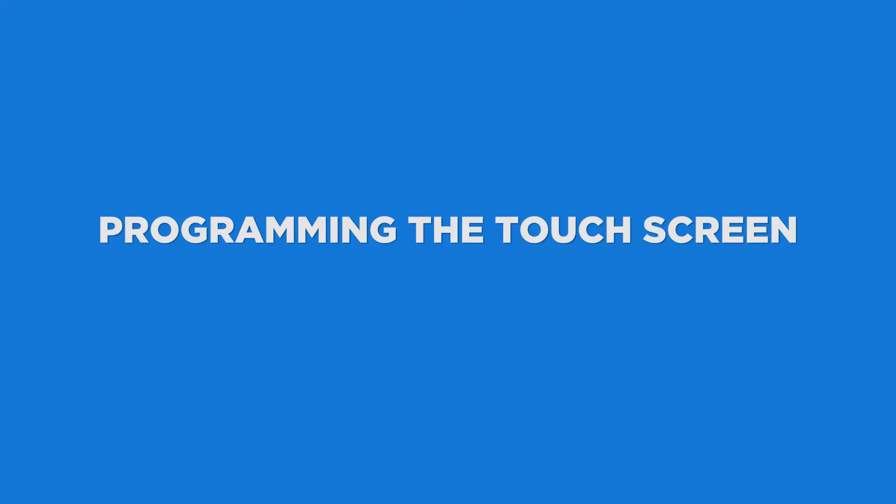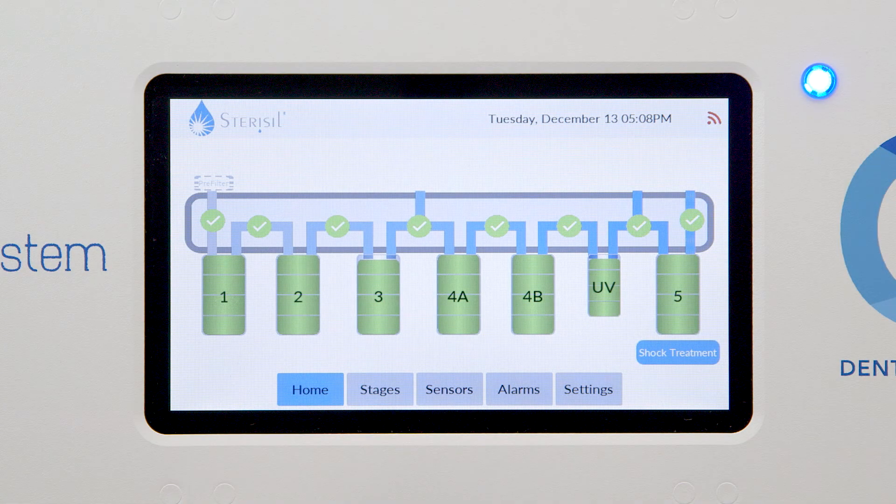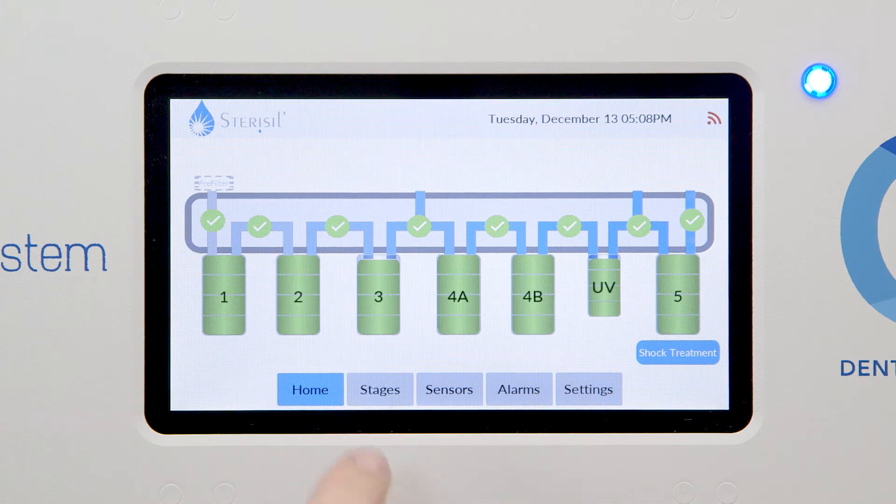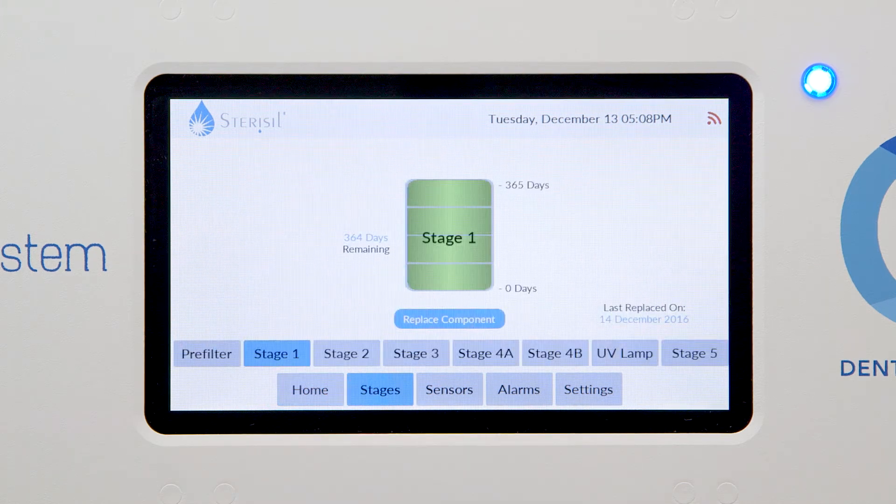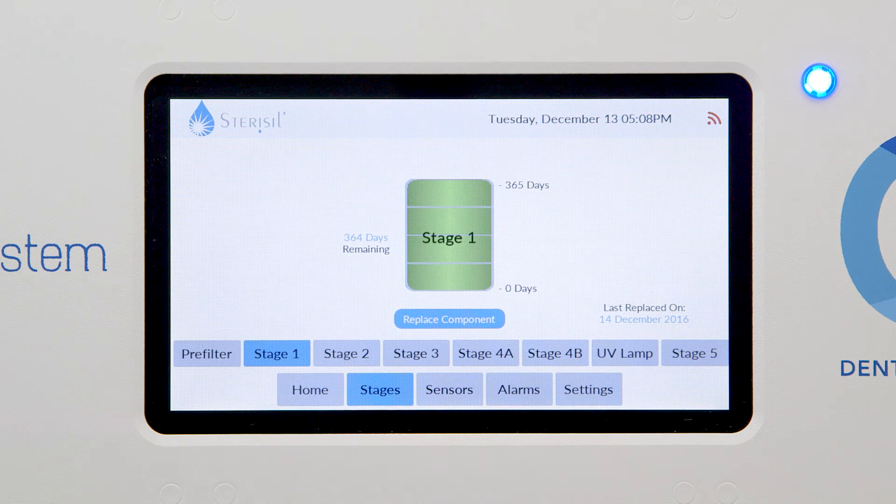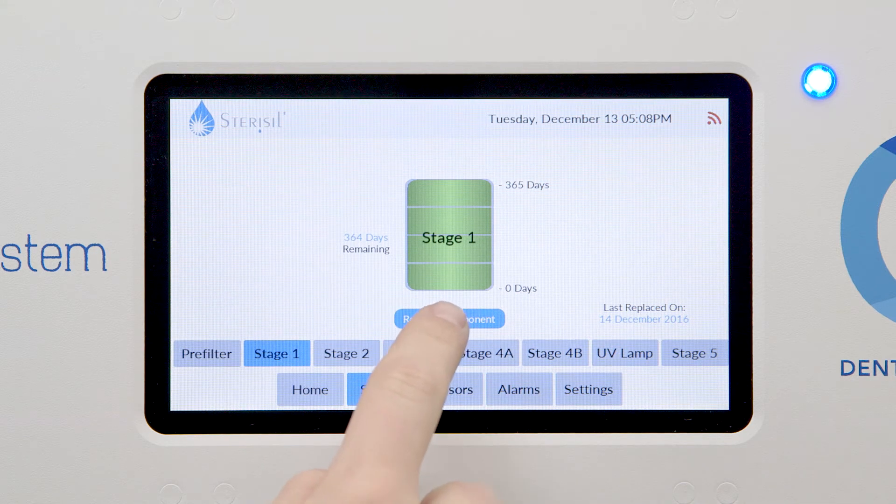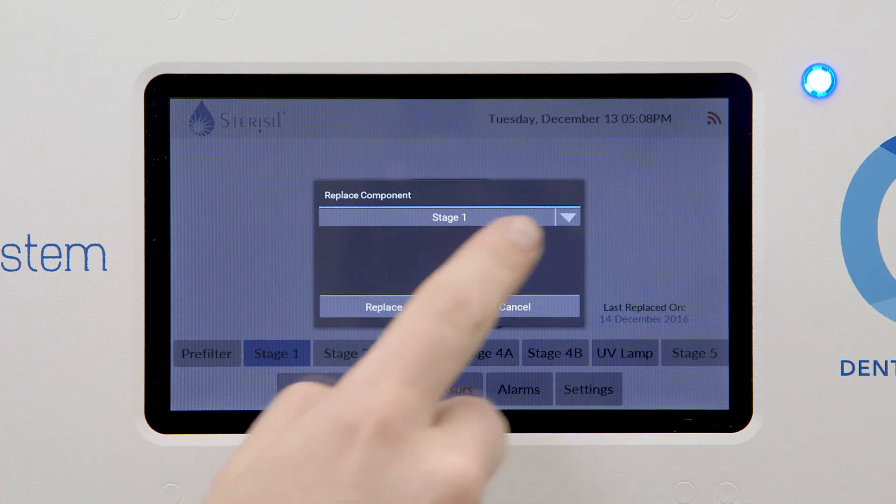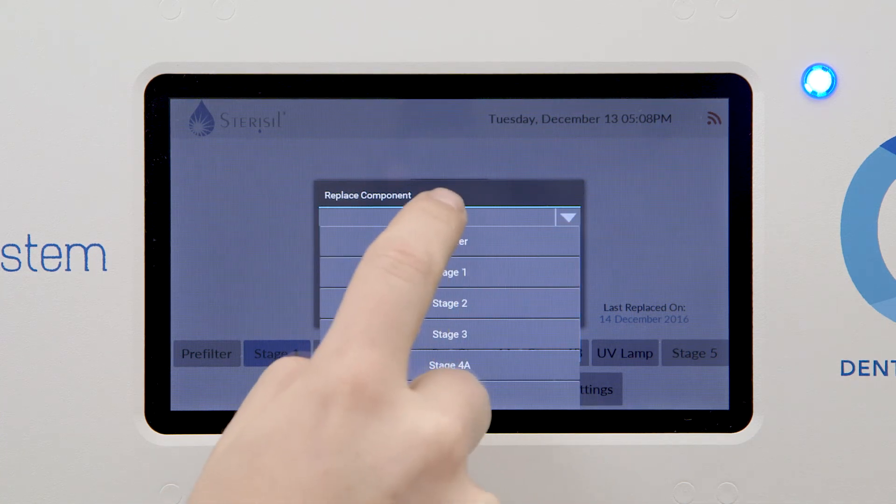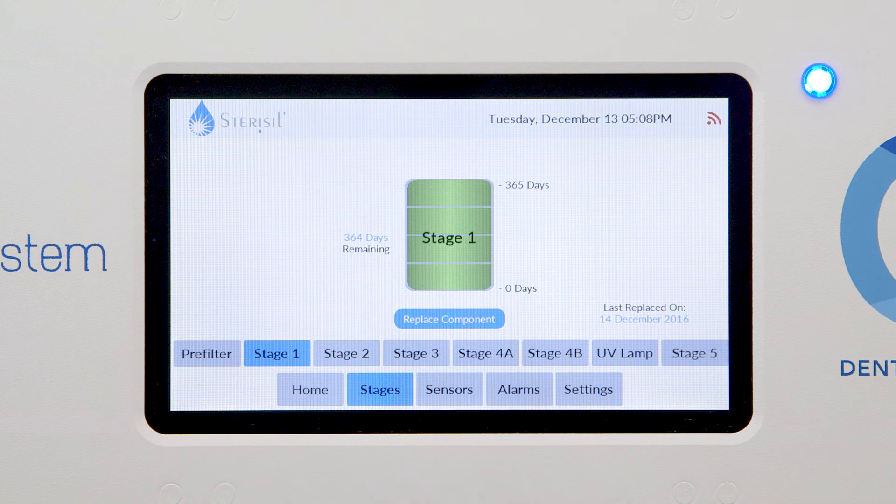Programming the touchscreen. Start by bringing up the details view by touching either the desired stage number from the home screen or select the stages tab from the bottom row. Stage 1's lifespan is for 364 days. If the counter is not reading 364 days, you'll select Replace Component. Select Stage 1 from the drop-down menu and hit Replace.